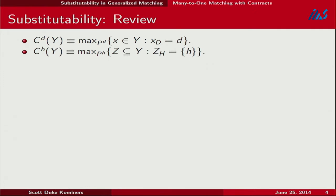We have choice functions derived from underlying preference relations. The doctor chooses his favorite contract with respect to his preference ordering. The hospitals choose their favorite sets of contracts with respect to their preference ordering. This looks just like many-to-one matching except now we're choosing contracts. A doctor might be choosing a contract with a certain wage, or specifying whether they'll be working as a surgeon instead of a general practitioner.